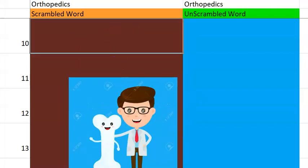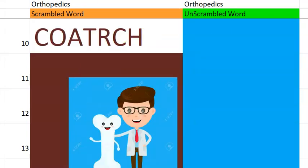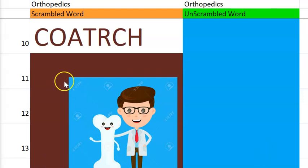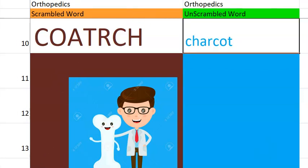Let's go to the tenth one. What do you think this one is? It starts with a C. It is also called neuropathic arthropathy. Charcot joint — bone and joint changes that occur secondary to loss of sensation. You can see it even in diabetes. So the answer here is Charcot.